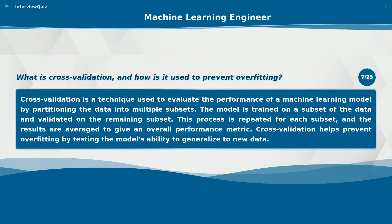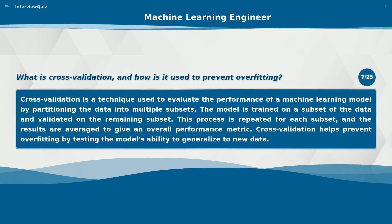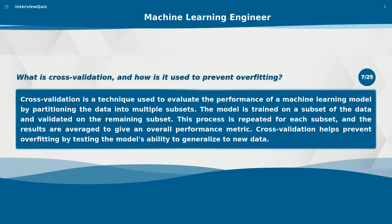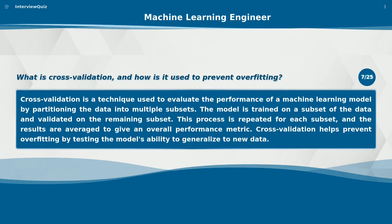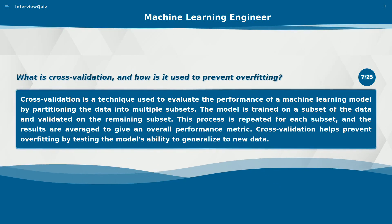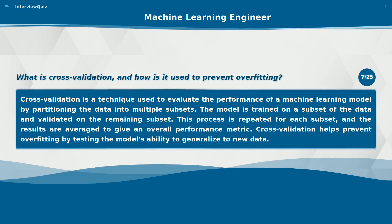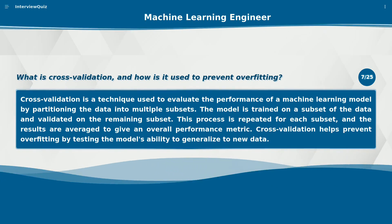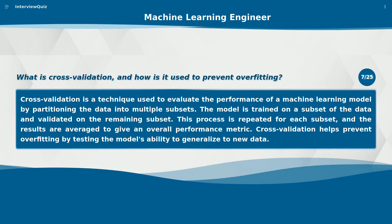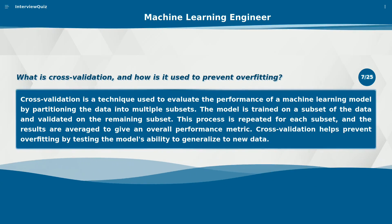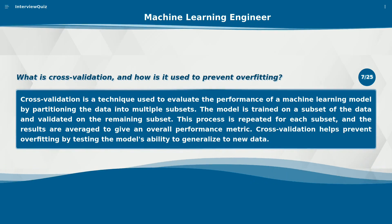What is cross-validation and how is it used to prevent overfitting? Cross-validation is a technique used to evaluate the performance of a machine learning model by partitioning the data into multiple subsets. The model is trained on a subset of the data and validated on the remaining subset. This process is repeated for each subset, and the results are averaged to give an overall performance metric. Cross-validation helps prevent overfitting by testing the model's ability to generalize to new data.